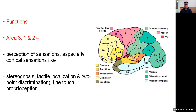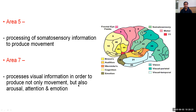What is the function of the parietal lobe? Areas 3, 1, and 2 are responsible for perception of sensation, especially cortical sensations like stereognosis, tactile localization, two-point discrimination, fine touch, and proprioception. Area 5 is involved in processing somatosensory information to produce movement, and area 7 processes visual information to produce not only movement but also arousal, attention, and emotion.